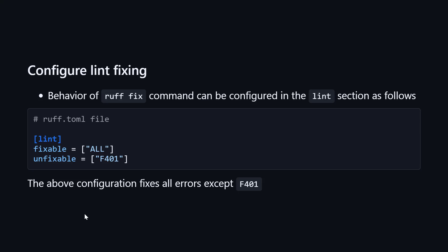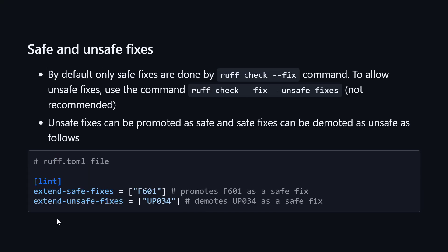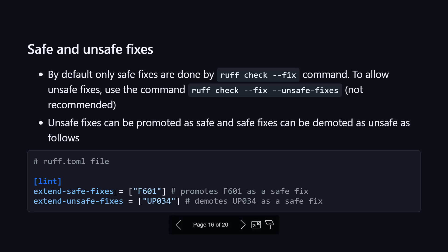You can configure lint fixing as well. Use the unfixable setting to specify which linting rules should not be auto-fixed. Note that ruff check --fix only fixes safe errors. You can also fix unsafe errors using the additional flag --unsafe-fixes, though that's obviously not recommended. To promote an unsafe fix to a safe fix, write extend-safe-fixes and mention the unsafe rule. Conversely, to demote a safe fix to an unsafe fix, use extend-unsafe-fixes — meaning ruff check --fix will not apply that fix automatically.